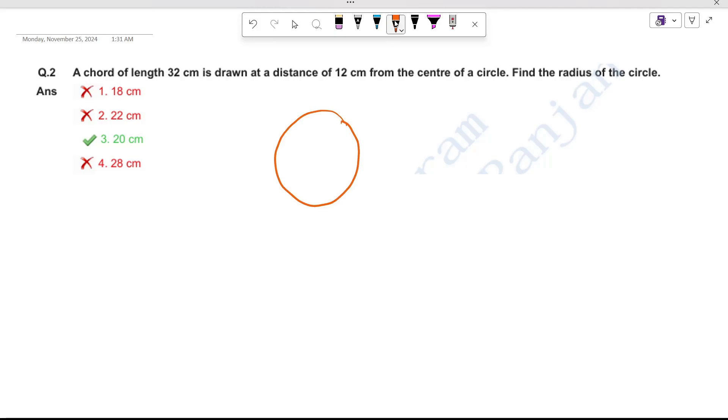We have drawn a circle. This is a chord. We have drawn a chord and the length of the chord is given as 32 cm. And we consider the center here. The center here is O.